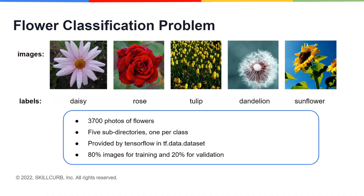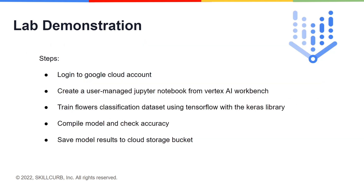In this lab we will be using a flower classification problem. This problem is an example of supervised machine learning where the model is trained from examples that contain labels. These are the steps we will be performing in this lab: first we will log into our Google Cloud account, then create a user managed Jupyter notebook from Vertex AI Workbench, write Python code for training a flowers classification dataset using TensorFlow with the Keras library, compile our model, check the accuracy, and finally save the model results to Cloud Storage.